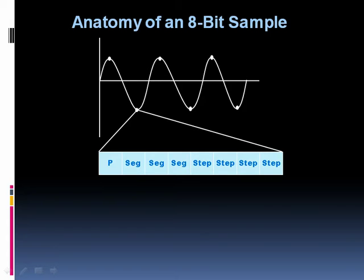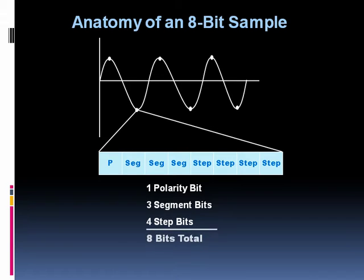A 64k circuit is referred to as a DS0 in digital circuits. Again, here's how we get those eight bits. We have one polarity bit, three segment bits, and four step bits for a grand total of eight bits. Now that we understand how we can take the spoken voice and digitally represent these samples using eight bits per sample, what sort of digital circuits do we have out there today?